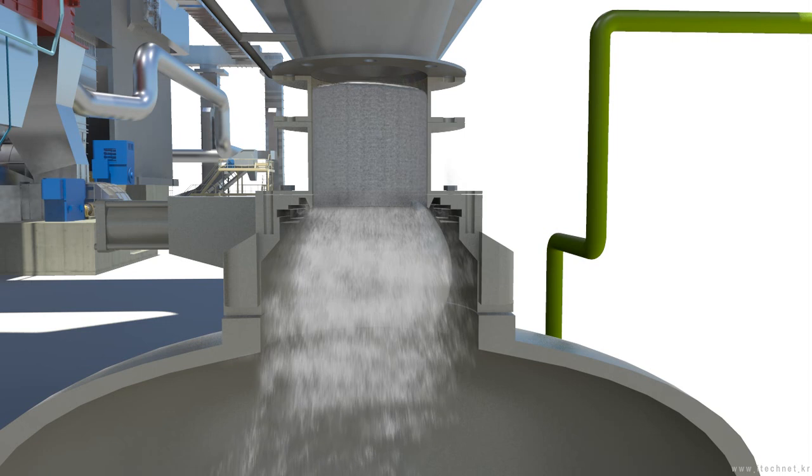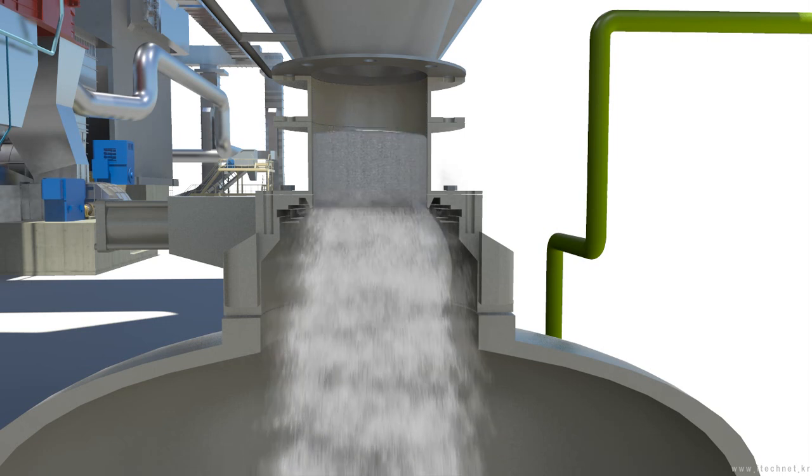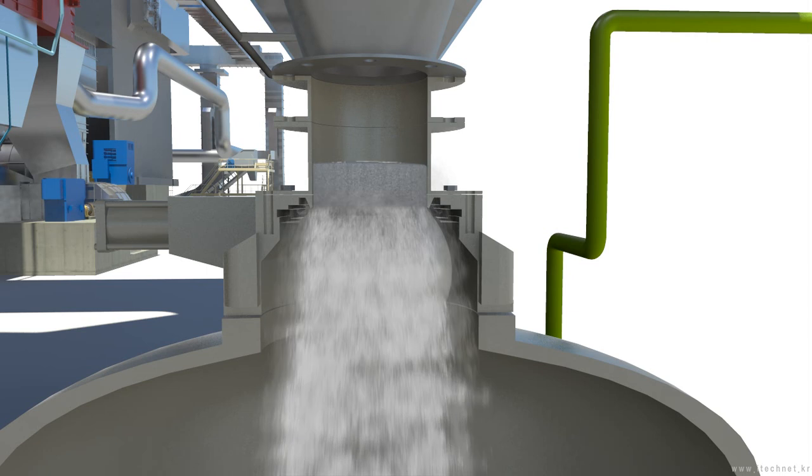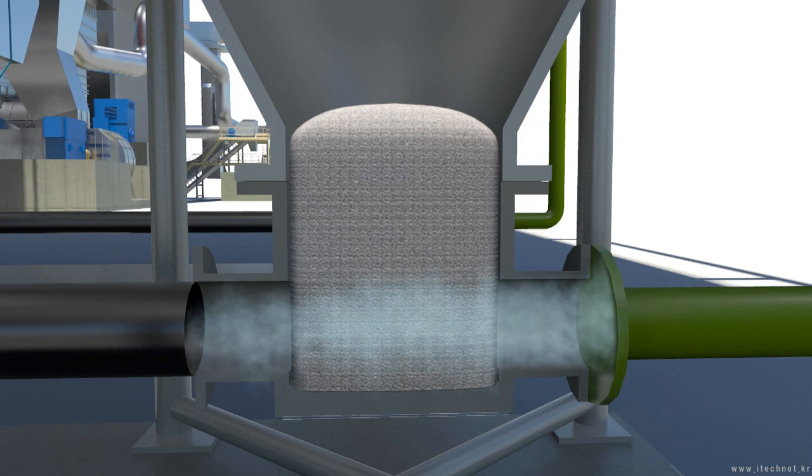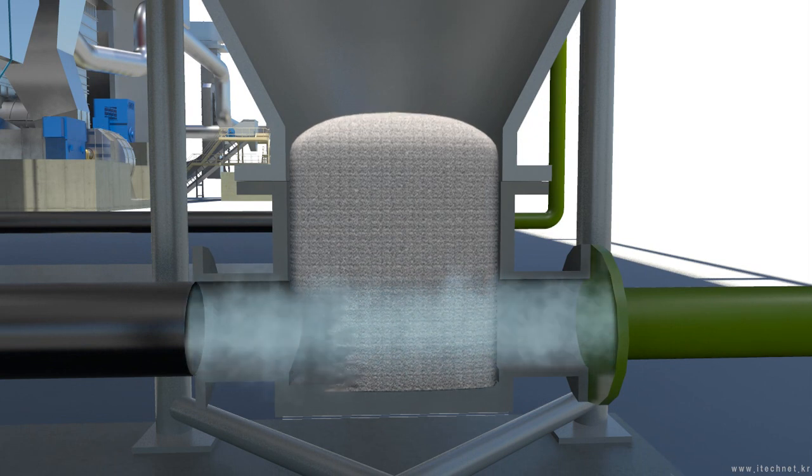When a certain amount of ash fills the pump, the valve is closed and sealed so that ash won't fall into the pump. The ash collected in the pump is transferred through the pipe by compressed air from the compressor.